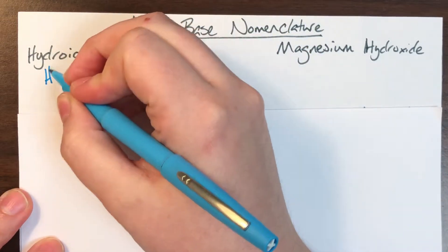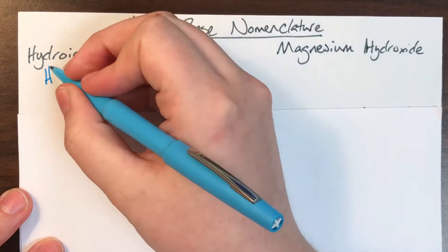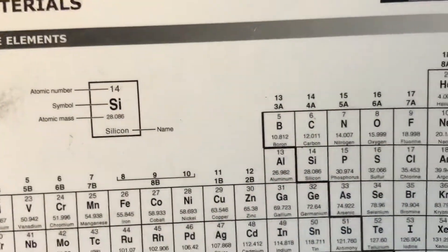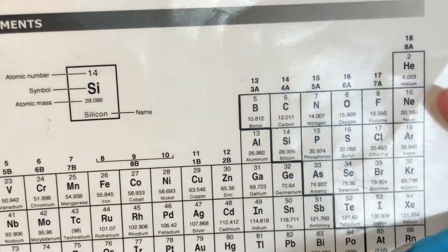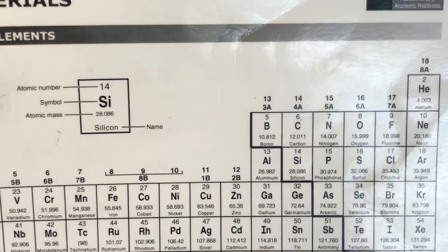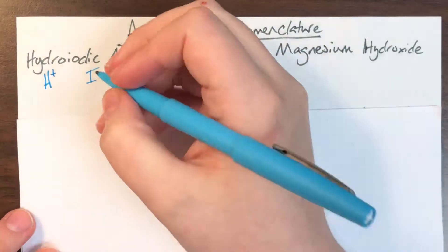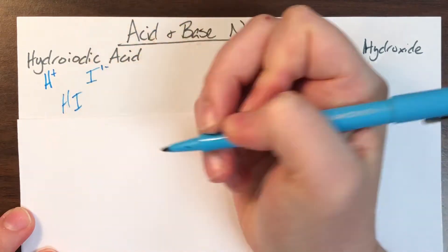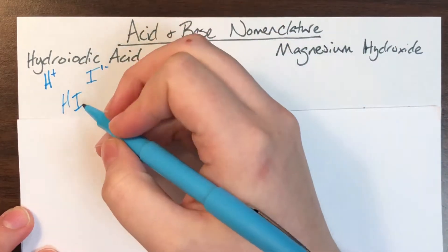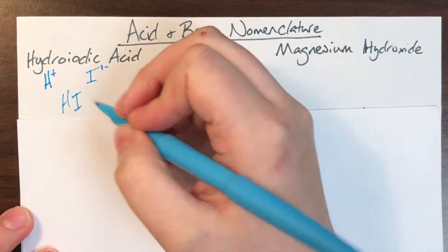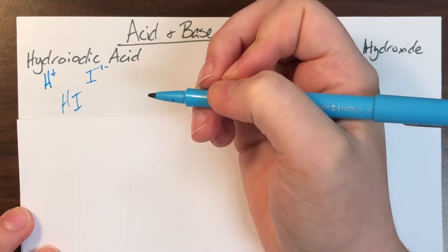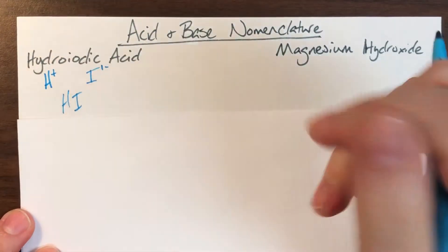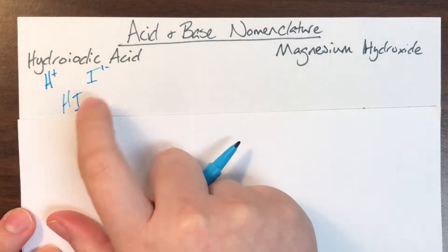Hydrogen, having only one valence electron, is going to have a charge of positive one. Iodine is in column seven, making it have seven valence electrons, so it will steal one, giving it a charge of negative one. When I write them together and exchange charges for subscripts, hydrogen's one becomes iodine's one — I don't write ones — and iodine's one becomes hydrogen's one — I don't write ones. So HI is hydroiodic acid.